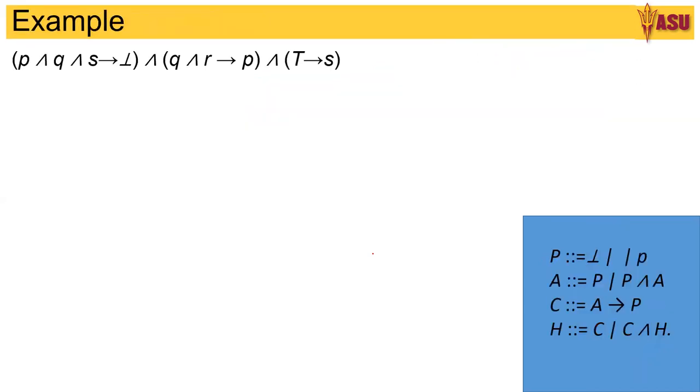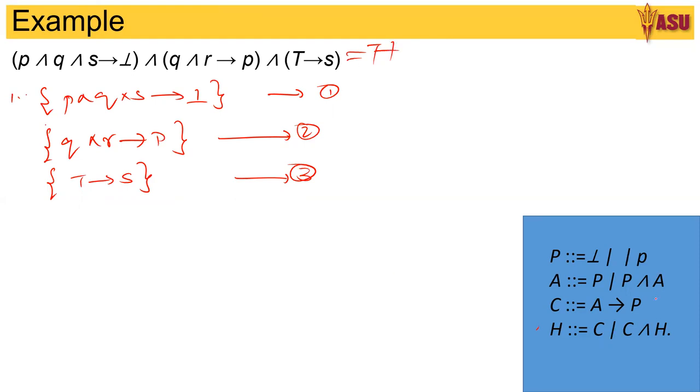So P and Q and S goes to false and Q and R goes to P and truth goes to S. So now let's write out our clauses. So my first clause is P and Q and S goes to bottom. So this is 1. Q and R goes to P. This is 2. And 3 is true goes to S. So this is 3. So these are my three clauses. So I've put the formulas for the Horn's formula over here. So H, this is H. From this, I've got my Cs.